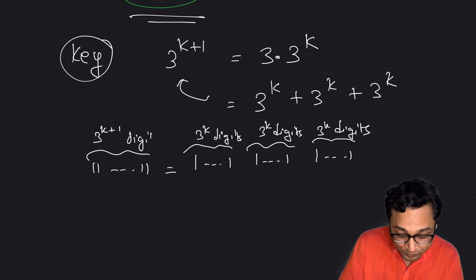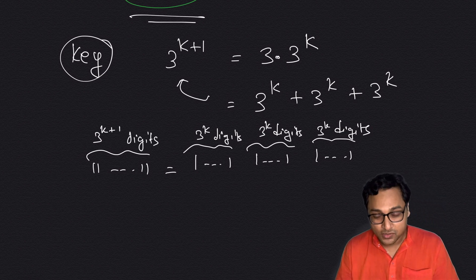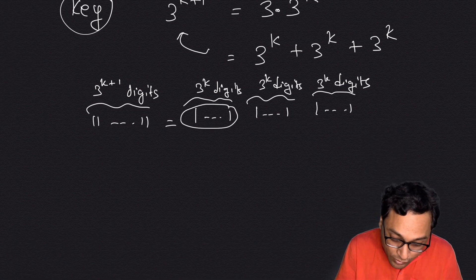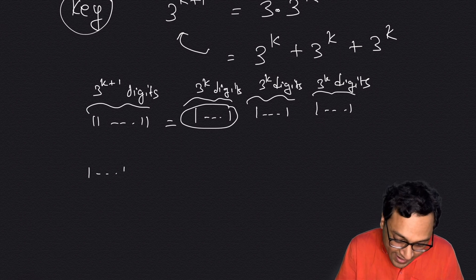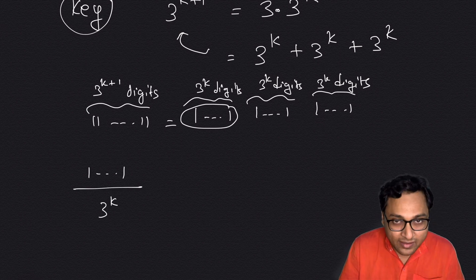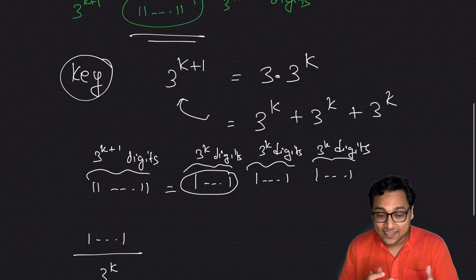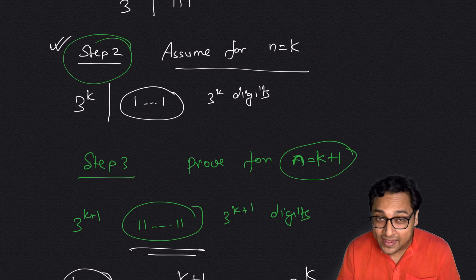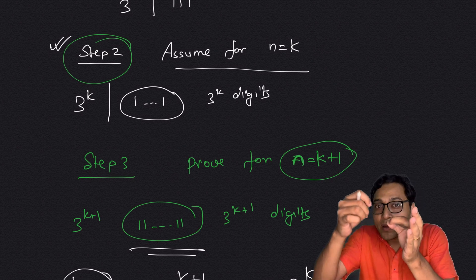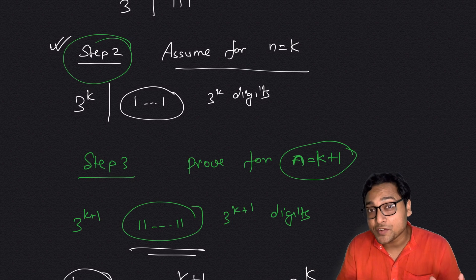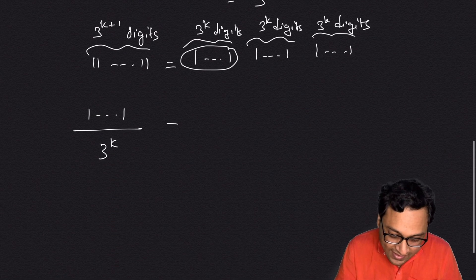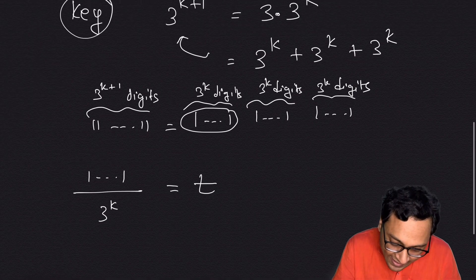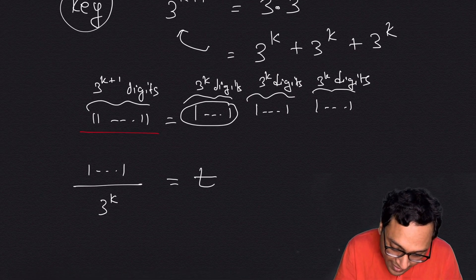Now we're almost done. Each block, when divided by 3 to the power k, gives an integer — because by the induction assumption, any repunit with 3^k digits is divisible by 3^k. So let's call that quotient t, where t is an integer.